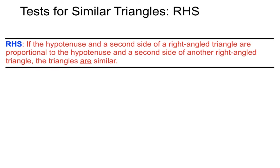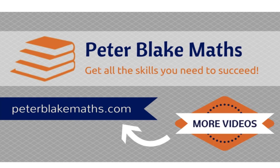So there are the four tests for similar triangles we've been through. SSS, SAS, AAA and RHS for similar triangles. Hope that helps. PeterBlakeMaths.com. Catch you next time.